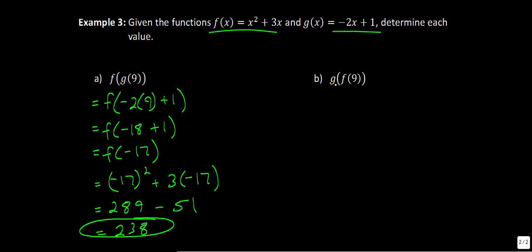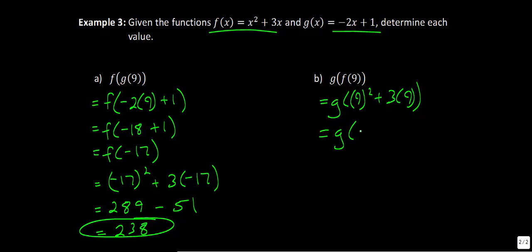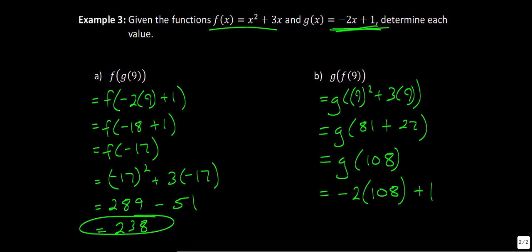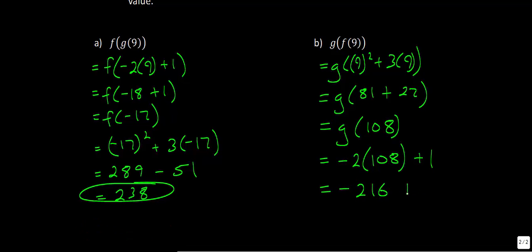For g of f of 9, we go in the opposite direction — first putting 9 into f of x. We get 9 squared plus 3 times 9, which is 81 plus 27, giving us g of 108. Now substituting 108 into g of x: negative 2 times 108 plus 1 gives negative 216 plus 1, which equals negative 215 as the final answer.